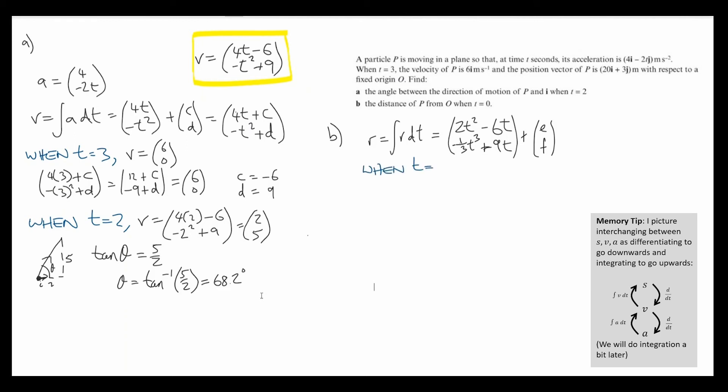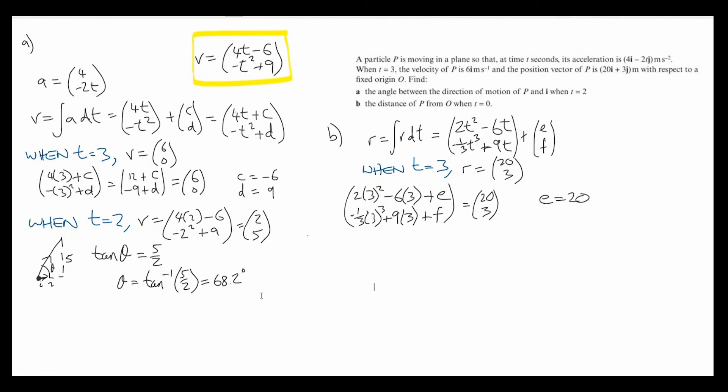We know that when t equals 3, the position is 23. So let's just substitute t equals 3 into our resultant vector for position. And we'll set that equal to 23. So as usual, we'll use the horizontal to solve for e. That's going to be 20. And we'll use the verticals to solve for f. f equals negative 15.